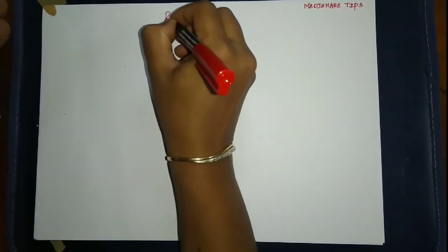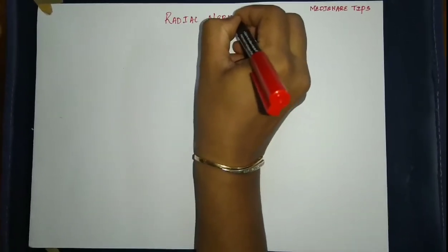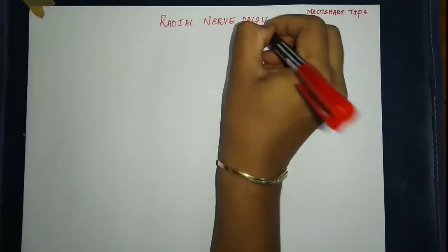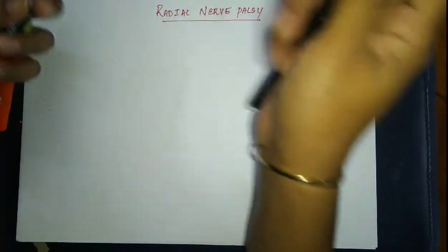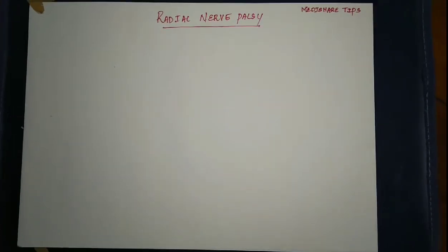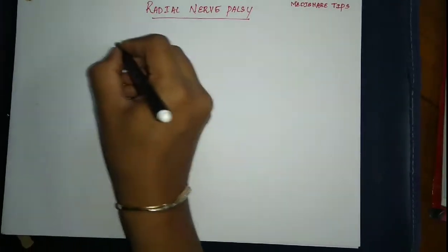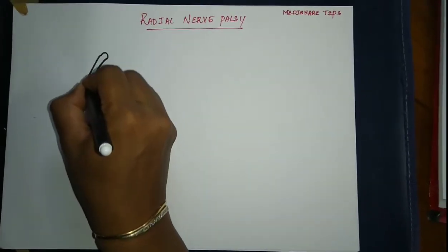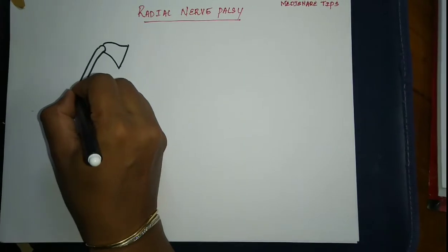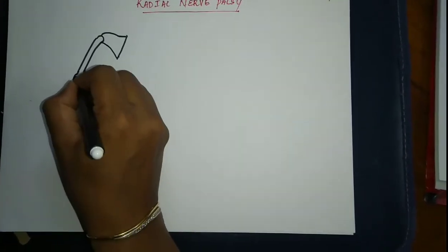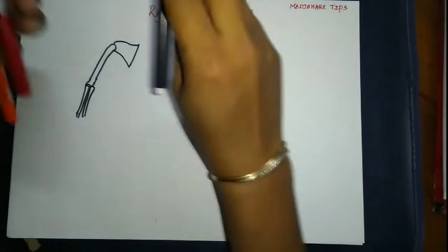Let's discuss radial nerve palsy. Before we understand radial nerve palsy, we should know about the course of the radial nerve. So let's add a brief description of the course of the radial nerve. Only the important branches are being mentioned here.